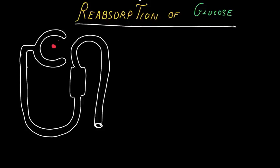These are the glomerular capillaries with the efferent and the afferent arteriole. This yellow shaded region is the proximal tubule, also called the proximal convoluted tubule. Please remember: all the filtered glucose is reabsorbed in the proximal convoluted tubule.